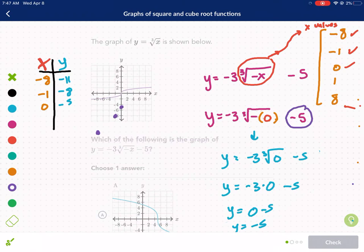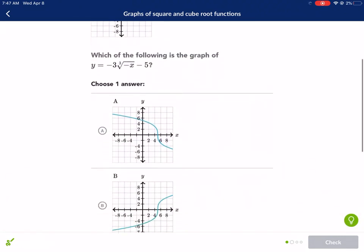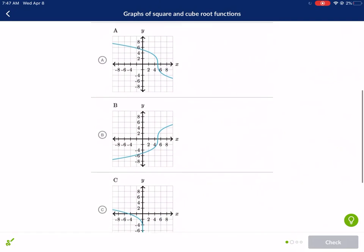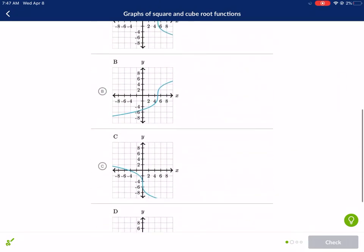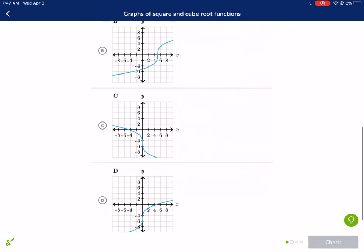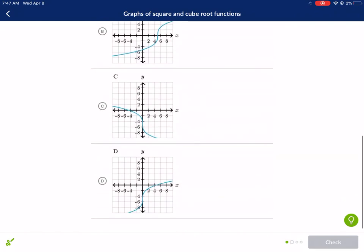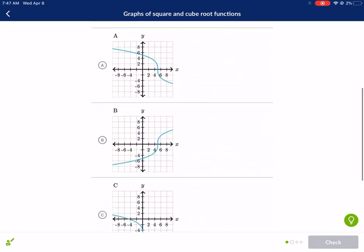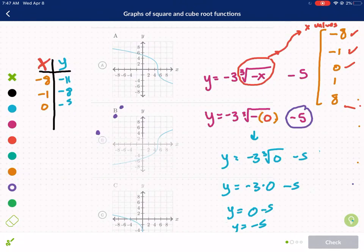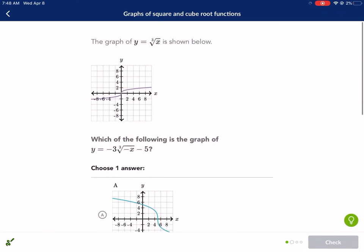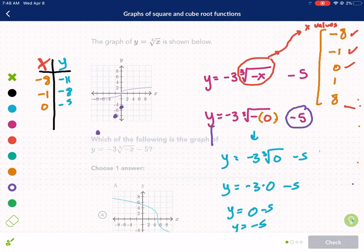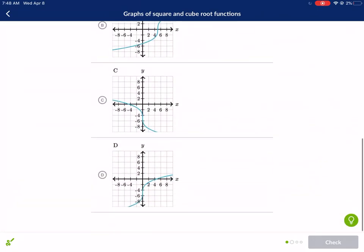So as we're doing these problems, you can eliminate bad choices right away. So A is a bad choice because its y-intercept is not negative 5. B might be a correct choice because its intercept is negative 5. C might be a good choice because it's negative 5. And D might be a good choice. So we're down to B, C, and D. But because we already plotted some points here, we recognize that our graph started way low and is going up. So which one starts way low and then goes up? Clearly D is our correct choice.